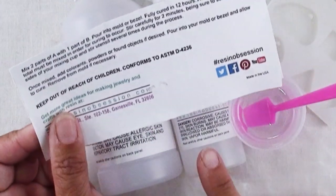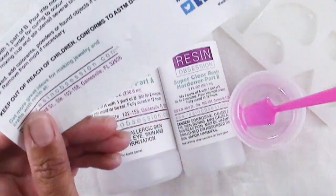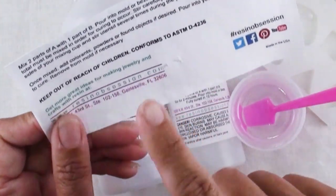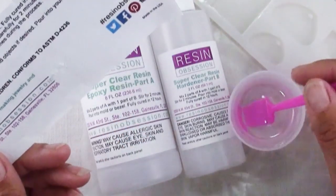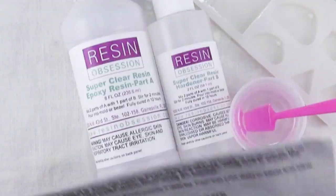This is a casting resin, it's not for doming where you want to get that nice dome like a cabochon look. This is for casting so that's why it's a little bit less viscous and the bubbles pop more readily which is wonderful.